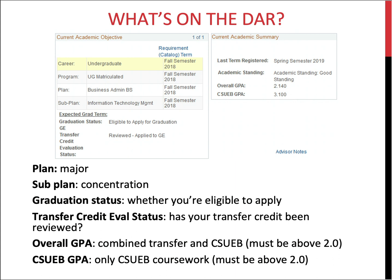In the box to the right, you'll see the last term you registered for — for example, fall 2020 or spring 2017 if that was your last term. Under academic standing, it tells you whether you're in good standing or on probation. The overall GPA combines transfer credit courses with those taken at CSU East Bay; you must maintain a 2.0. The CSUEB GPA shows only coursework taken at East Bay and must also be at least 2.0.